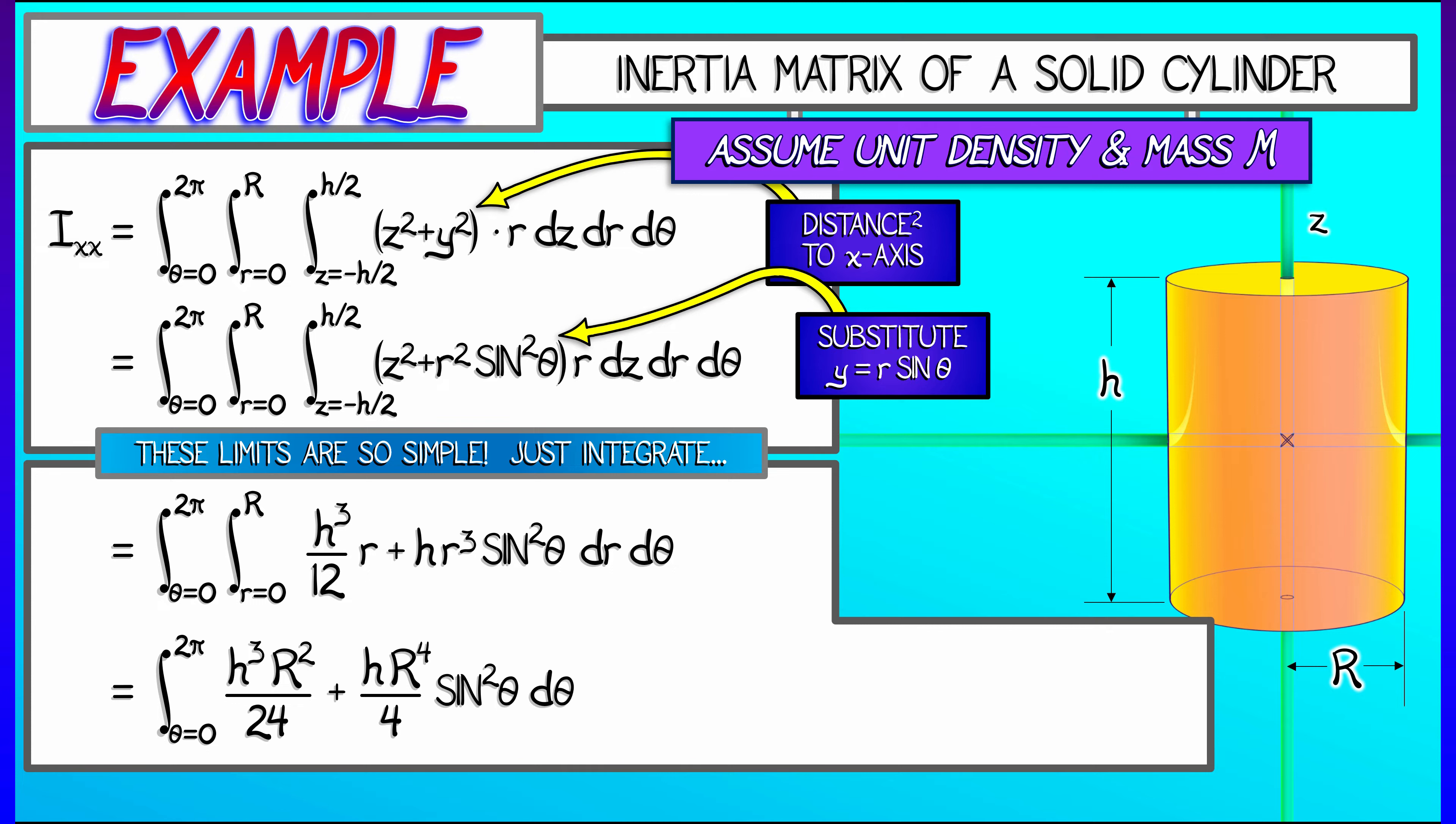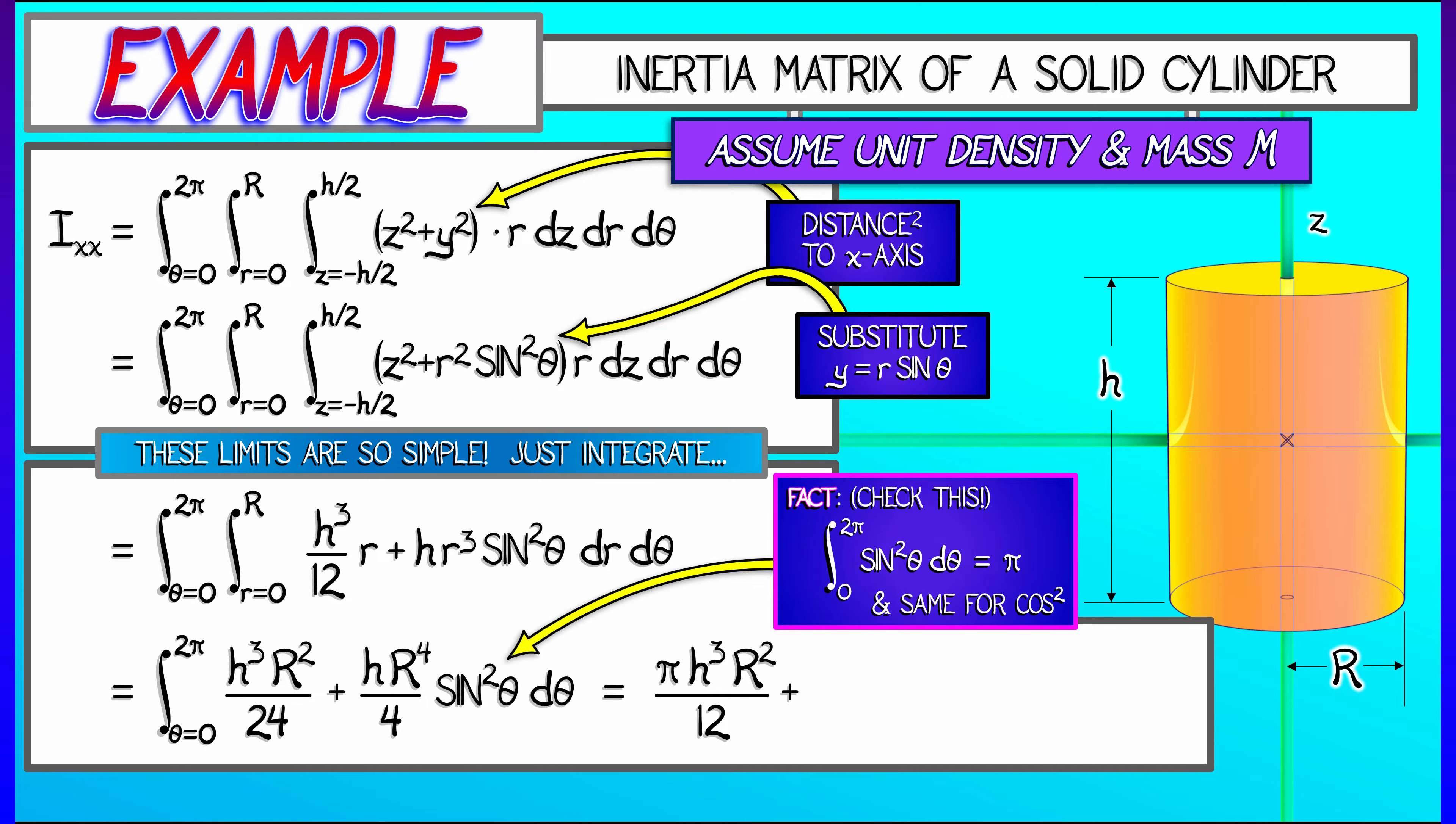Now I have these two terms. I have to integrate them with respect to theta, as theta goes from 0 to 2 pi. The first term is easy. That's just multiplication by 2 pi. That gives me pi h cubed capital R squared over 12. For the second term, I have to integrate sine squared theta over a full period from 0 to 2 pi. You may recall from single variable calculus, that always equals pi, whether it's sine squared or cosine squared.